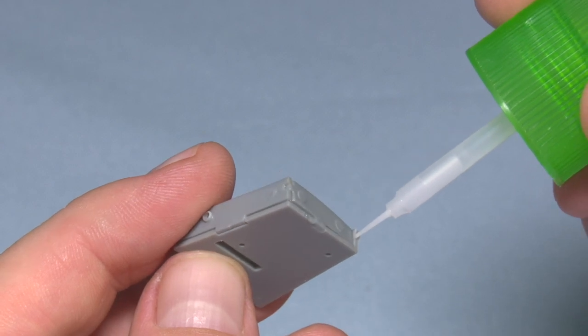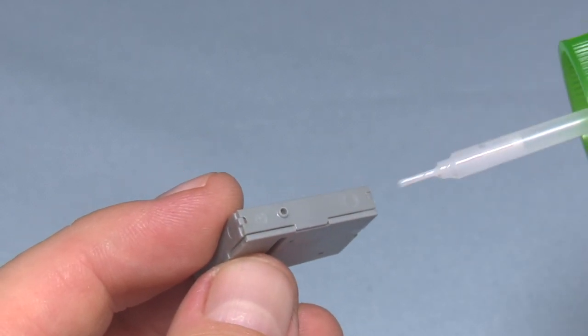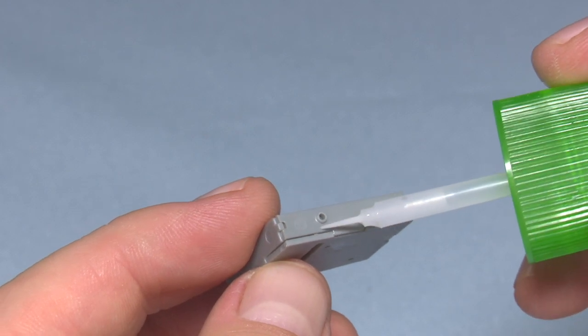And if any of the parts are on the outside, obviously you're going to have excess glue that will need to be cleaned up and sanded back.